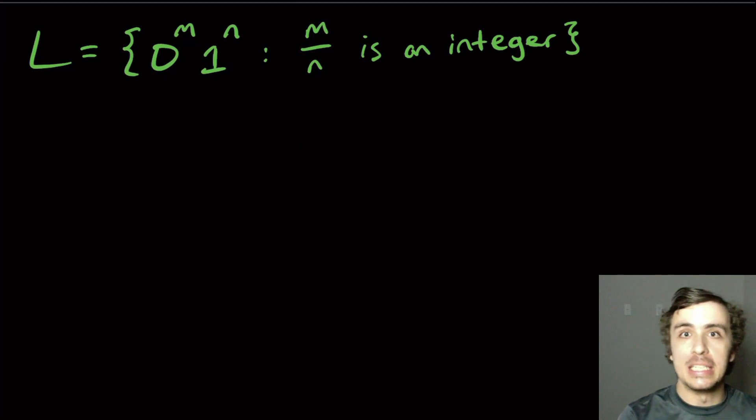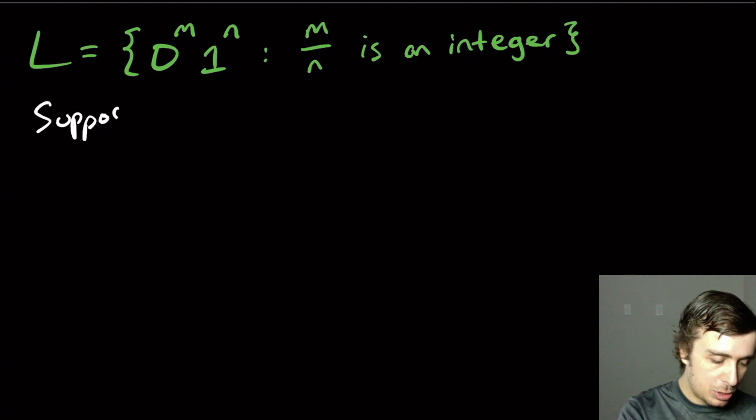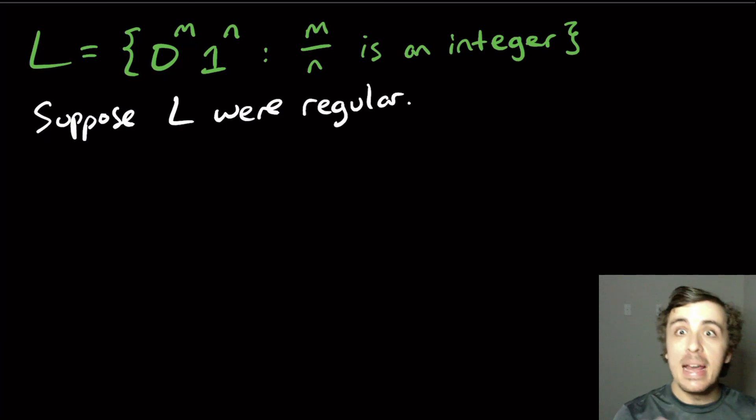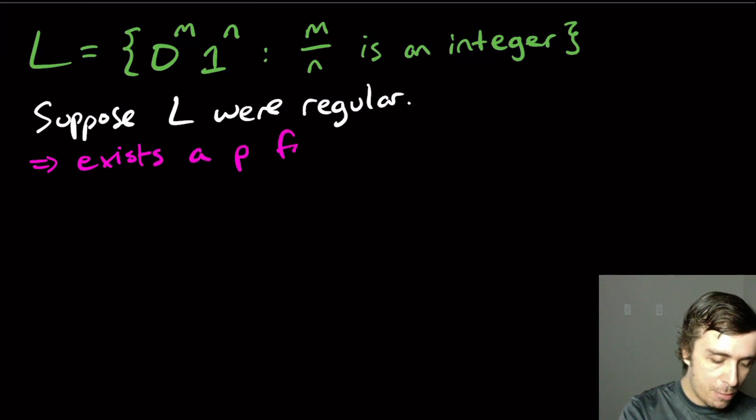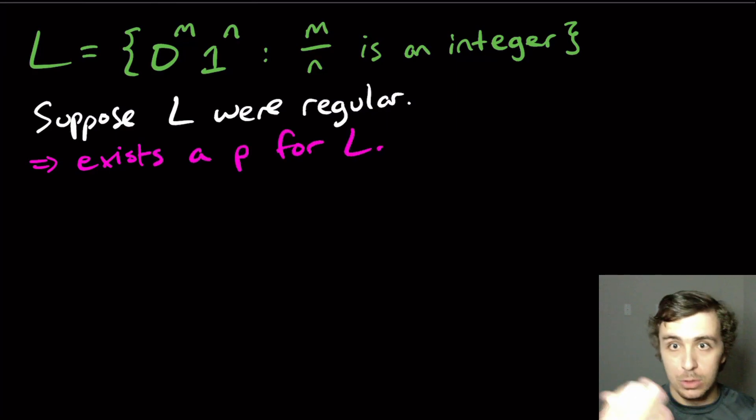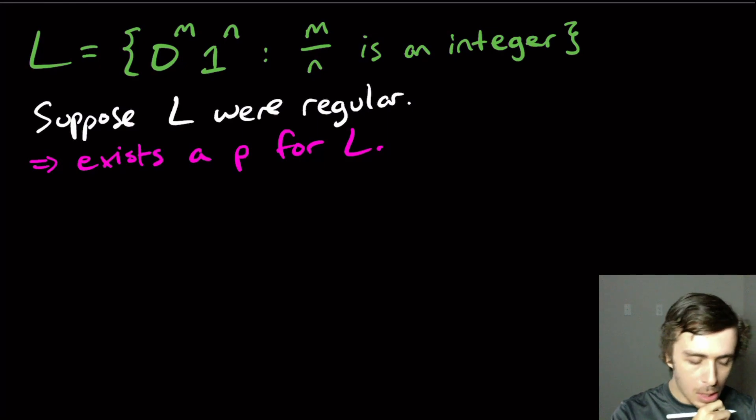And I want to show that this thing is not regular. So let's suppose that it is. So suppose that L were regular, then that means that there's a pumping constant p for L. So let's go ahead with that. So there exists a p for L. I'm shorthanding this.